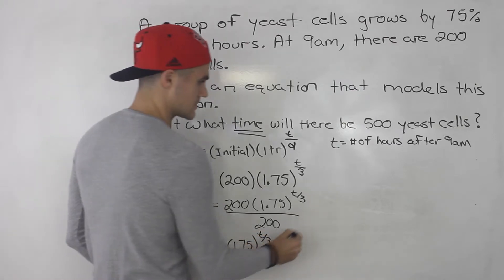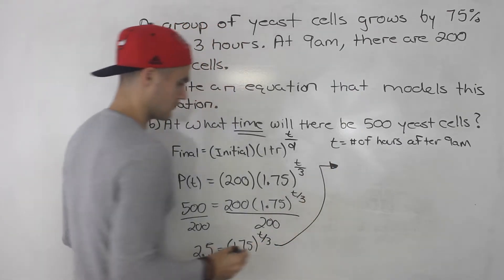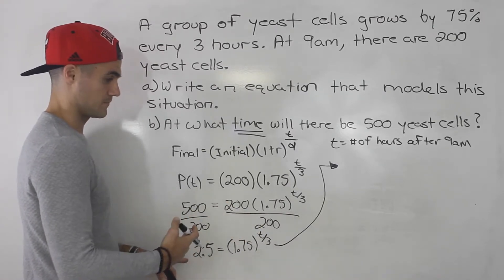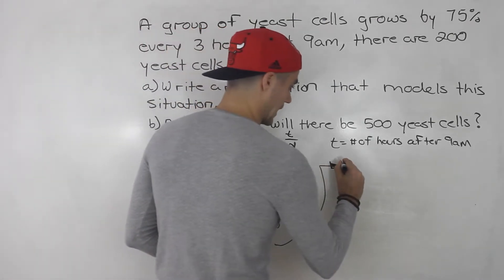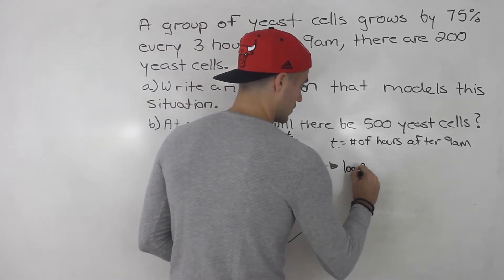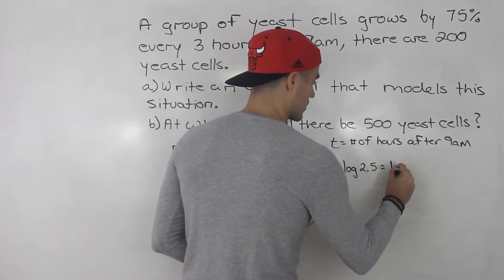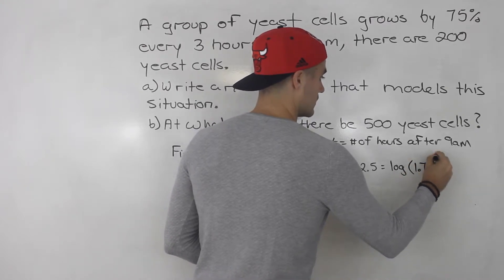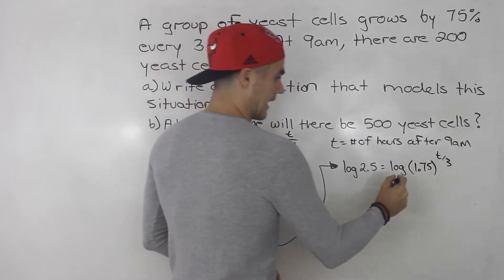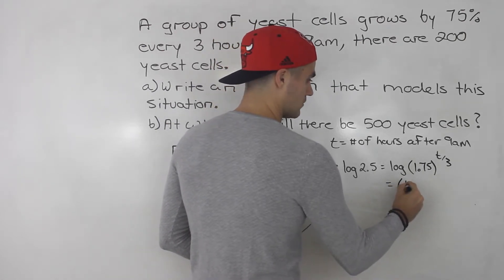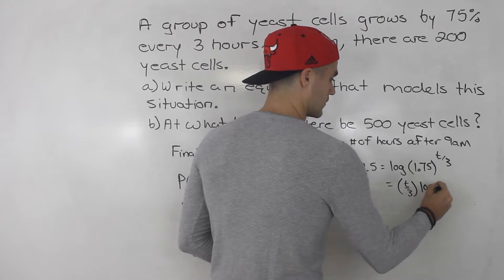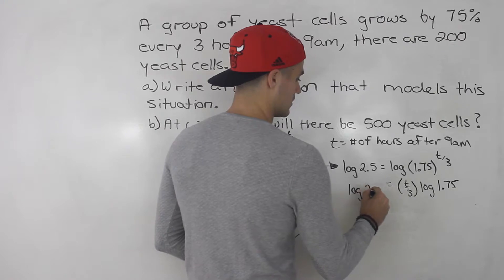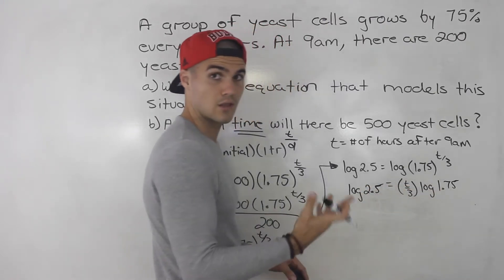Let's continue this up here. Because we're solving for a variable in the exponent, we need to bring that exponent down. The way we do that is take the logarithm of both sides. So we have log 2.5 equals log of 1.75 to the power of t over 3. Then we bring that t over 3 down: log 2.5 equals t over 3 times log 1.75. Divide both sides by log 1.75.